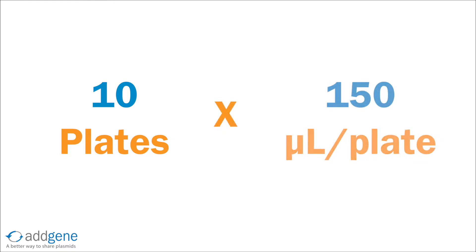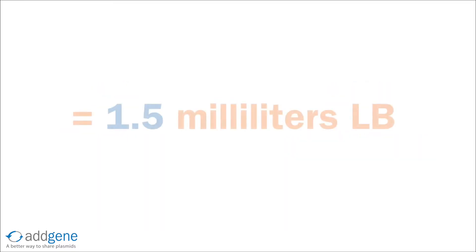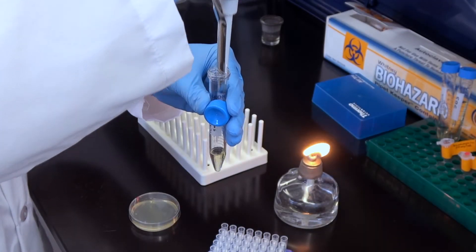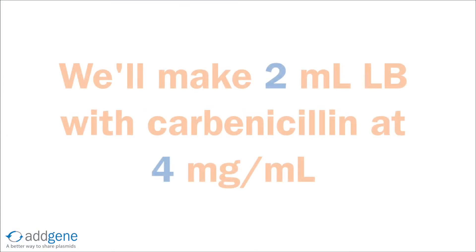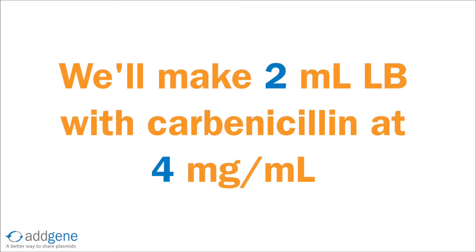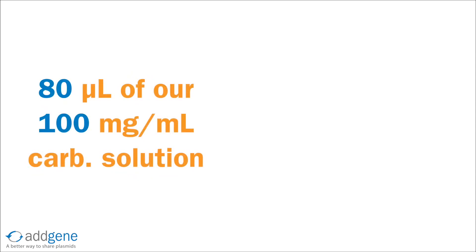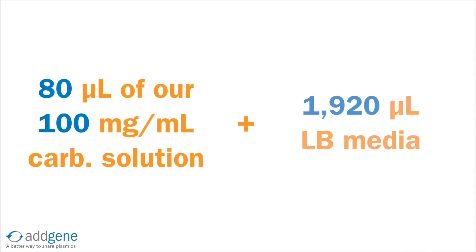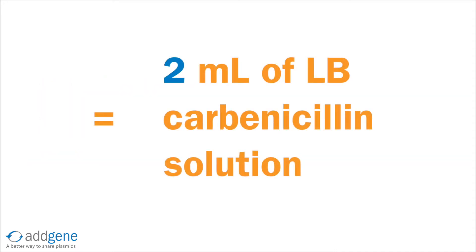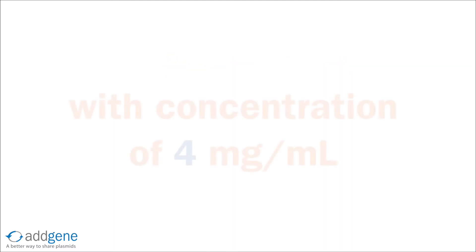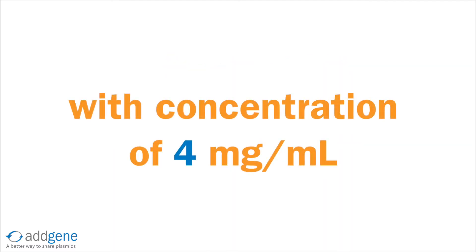For example, if we were making 10 plates, we would need 150 microliters per plate, equaling 1.5 milliliters of LB. It is always good to make a little more than we need, so we'll make 2 milliliters of LB with carbonicillin at 4 mg per milliliter. We simply dilute 80 microliters of the 100 mg per milliliter stock solution into 1,920 microliters of LB for a total of 2 milliliters, giving a final concentration of 4 mg per milliliter.